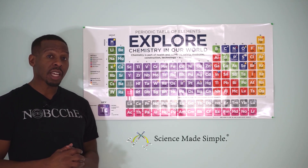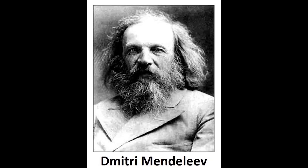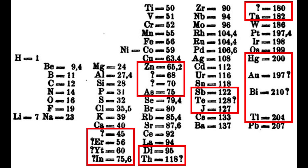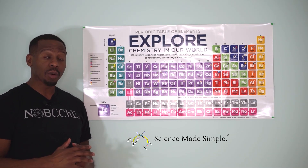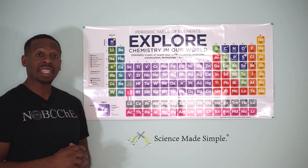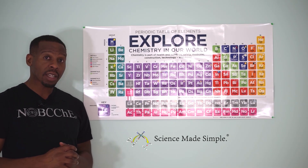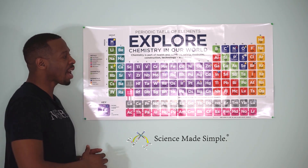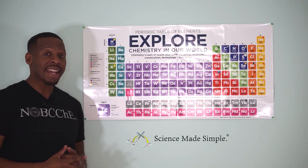It was Russian chemist Dmitry Mendeleev who is credited with devising the first version of the periodic table as we know it today. What was remarkable about this accomplishment was that Mendeleev even left room on his periodic table for elements that he predicted existed, but were not yet known. In 2016, the common version of the periodic table was completed all the way out to element number 118.